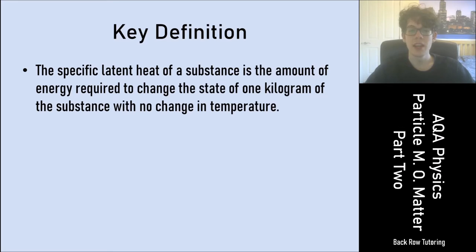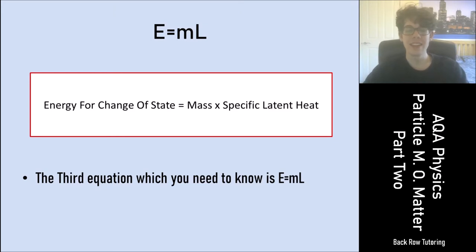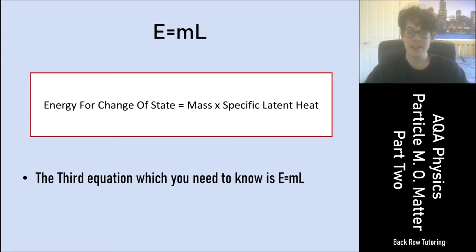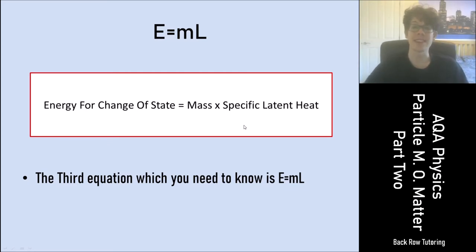A key definition: the specific latent heat of a substance is the amount of energy required to change the state of one kilogram of the substance with no change in temperature. The equation is E = mL. Energy for the change of state equals mass multiplied by the specific latent heat. Energy is in joules, mass is in kilograms, and specific latent heat is in joules per kilogram. This is the third equation you need to know for this topic.